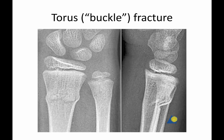Moving on from growth plate injuries, other types of fractures include buckle fractures. Here you can see the fracture doesn't involve the growth plate at all — there's a buckling of the bone, kind of like if you sit on an empty cardboard box and it buckles out. Also known as a torus fracture, this is a fracture with a fairly good prognosis that usually heals very well. You don't have complete instability, but it is a fracture that has to be treated, and oftentimes will be casted.